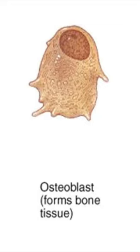The nucleus of an osteoblast is oval and euchromatic. The cytoplasm is basophilic because of the presence of abundant rough endoplasmic reticulum and a well-defined Golgi complex, which signifies that the cell is engaged in synthetic activity.